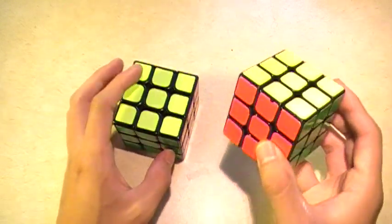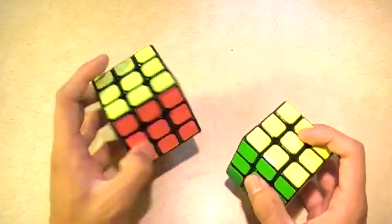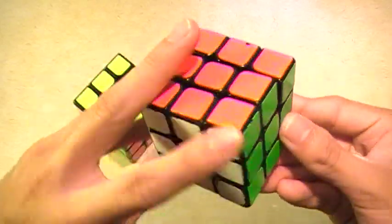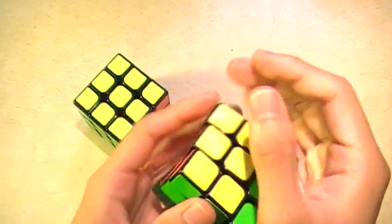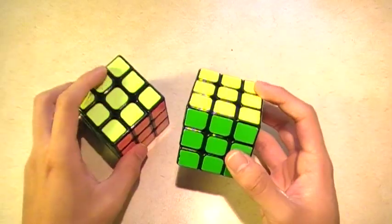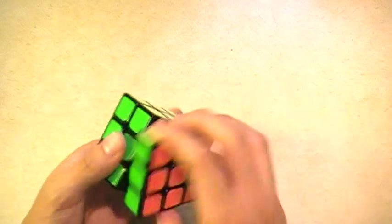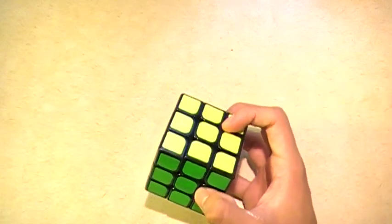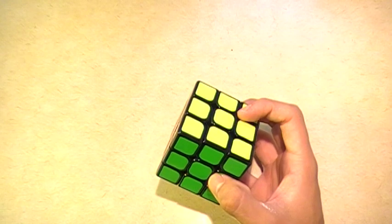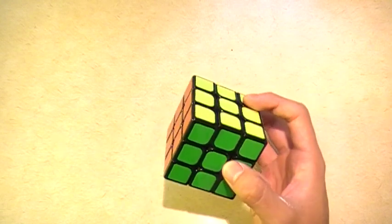But the one thing that the V1 had that the V2 doesn't have as much is the corner twist. This cube does corner twist a lot, which is really annoying when you're solving. So the V2 kind of solved that problem. I still do get it, but it's definitely not as much, and I don't really expect the corner twist from the V2 most of the time.